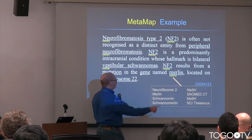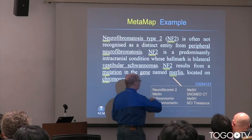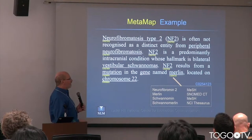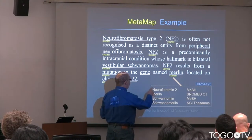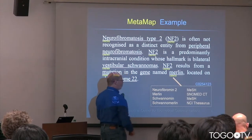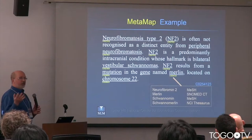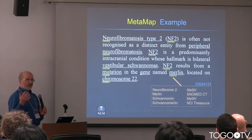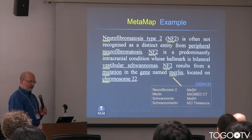The UMLS Metathesaurus, for a given identifier like C0254123, has collected all the terms from various terminologies — MeSH, SNOMED CT, the NCI Thesaurus — so strings as different as Neurofibromin II, Schwannomin, and Schwannomermin all happen to be synonymous and denote this protein. When the gene coding for this protein has a mutation, there's a defect to the protein and it doesn't play its role as a tumor suppressor.